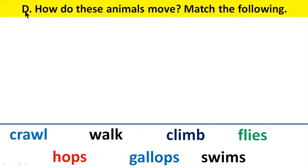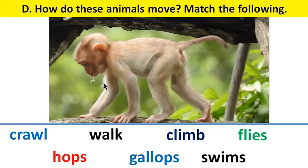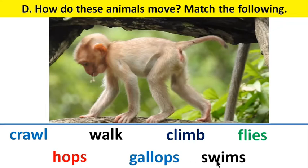Question number D. How do these animals move? Match the following. Here we have a monkey, and we can match to crawl or walk, climb, flies, hops, gallops, or swim.